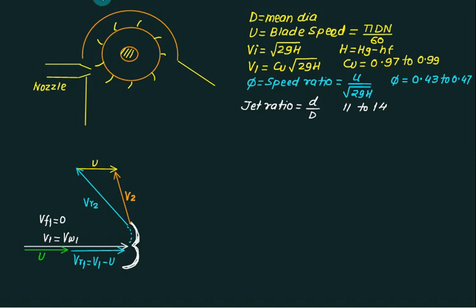This V2 has two components: one is velocity of flow in upward direction, and one is Vw2, and this component is called Vf2.